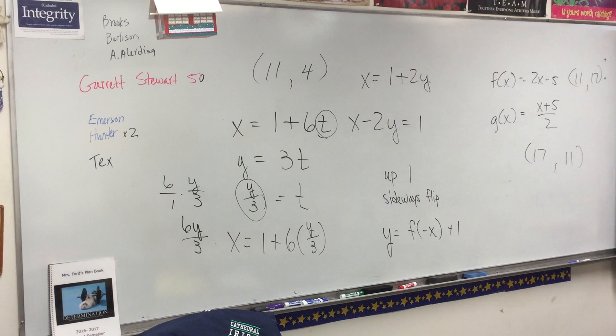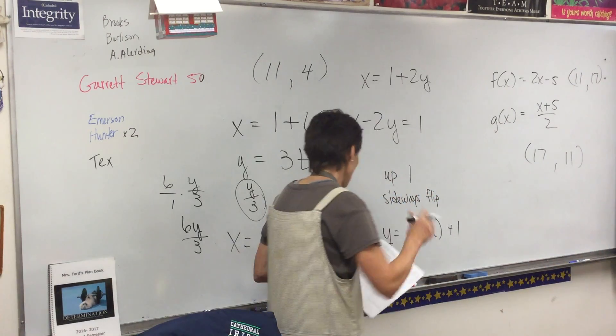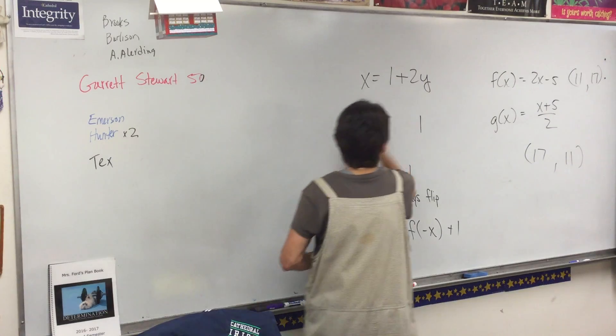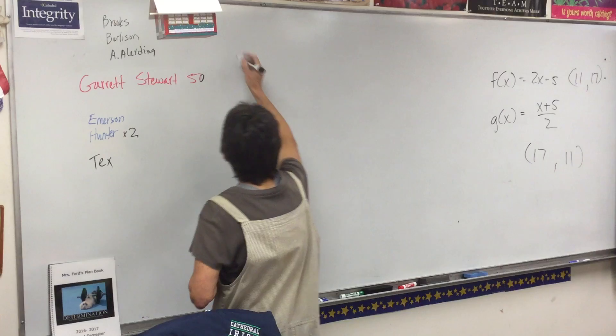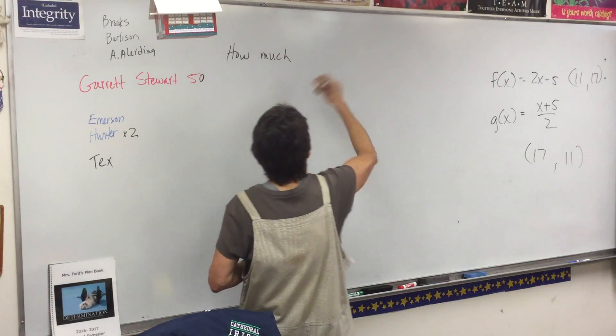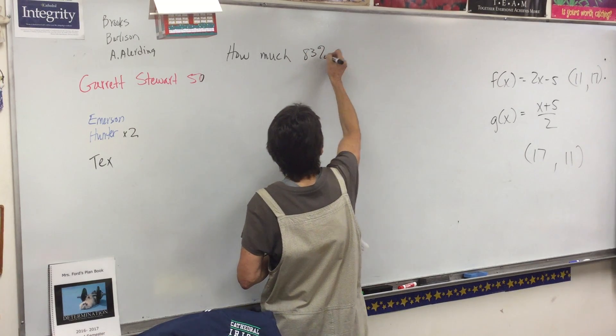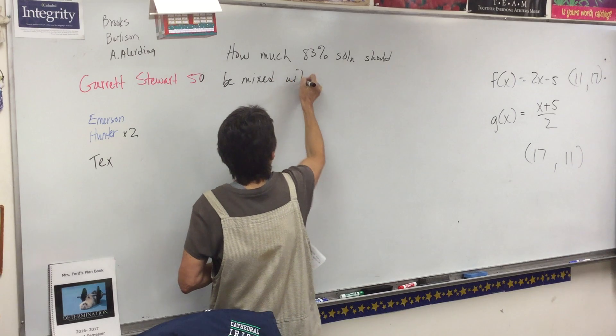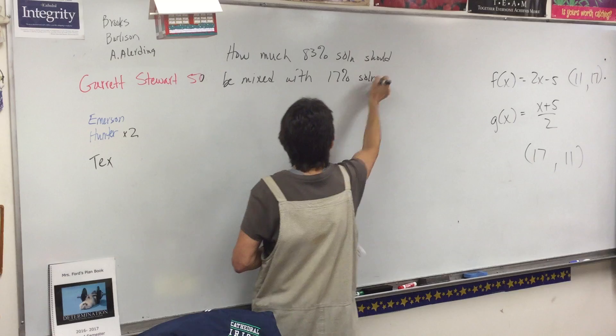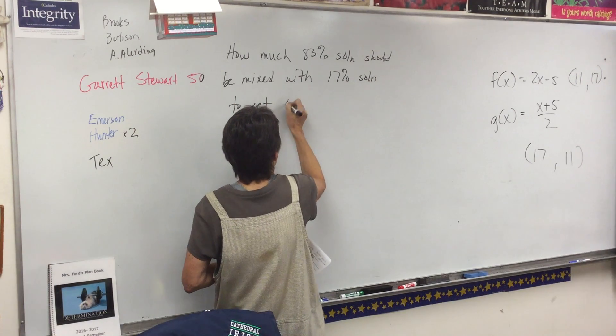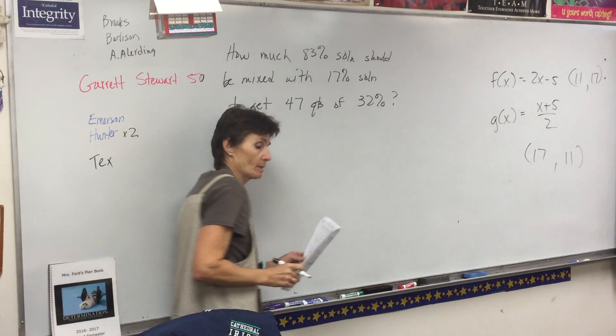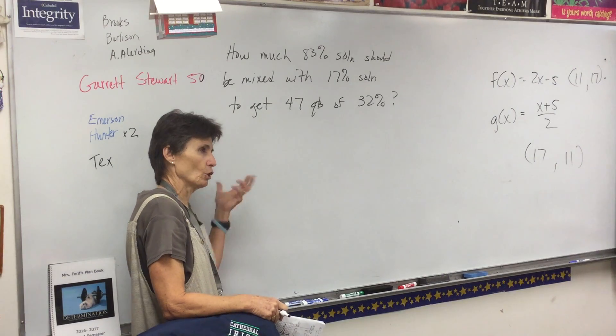Okay, while we are here I want to quickly do an alternate problem. Remember on the test we have to have different versions, so an alternate problem for number 10 would be this: how much 83% solution should be mixed with 17% solution to get 47 quarts of 32% solution? Okay, so it's the same basic problem but it's going to look a little bit different when I get it written out.